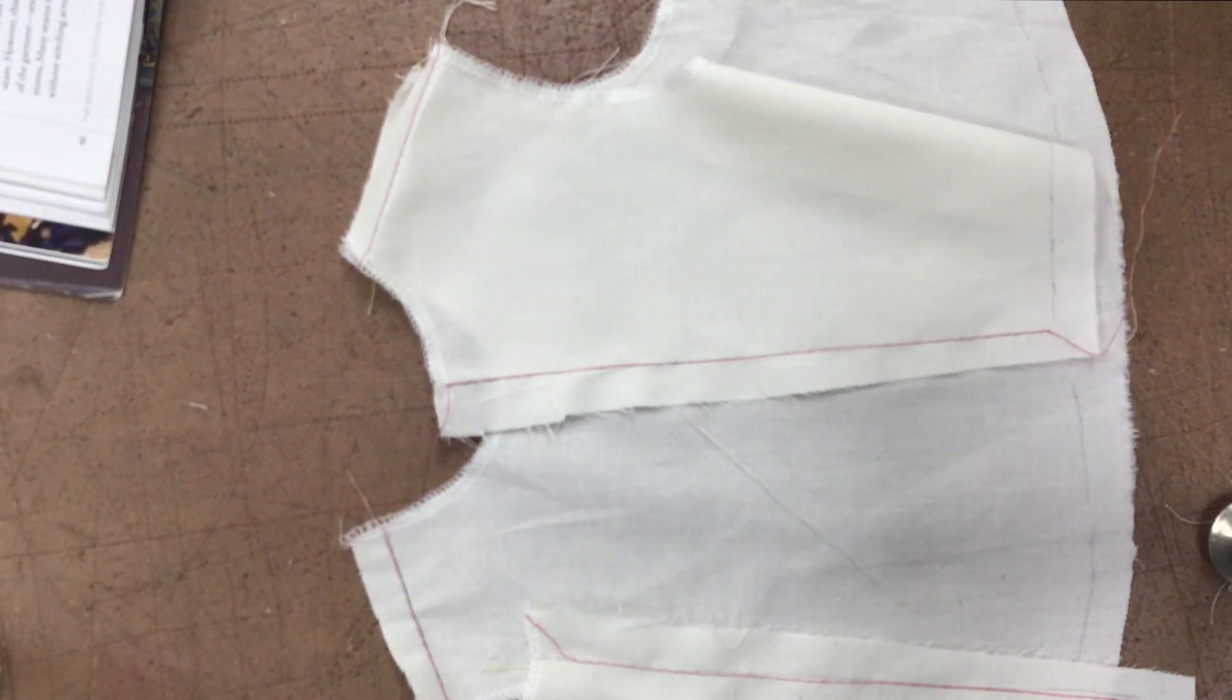So just to read that again, we are going to ease baste with tiny running stitches to hold the excess fabric. The stitches are going to smoothly ease rather than gather or pleat the fabric.